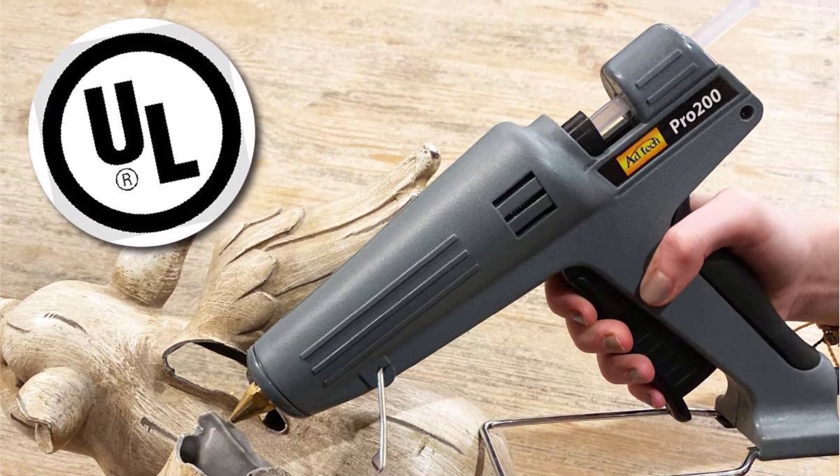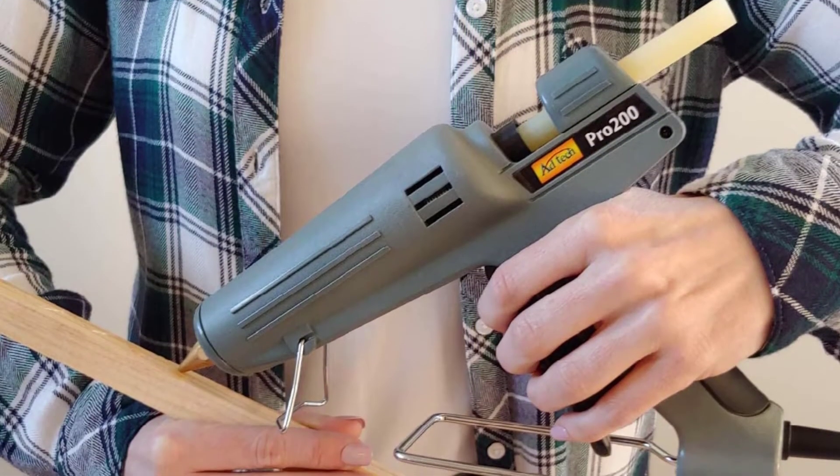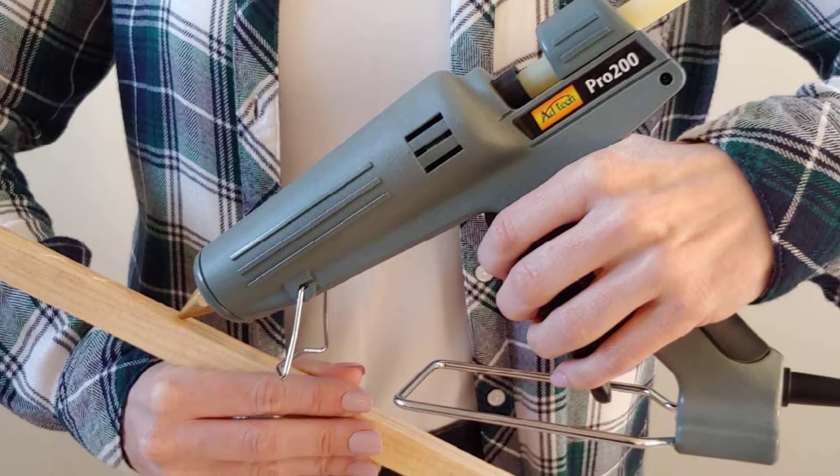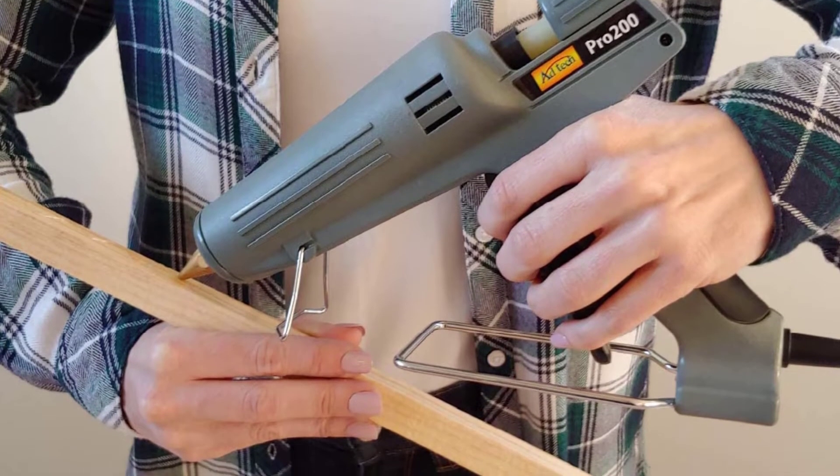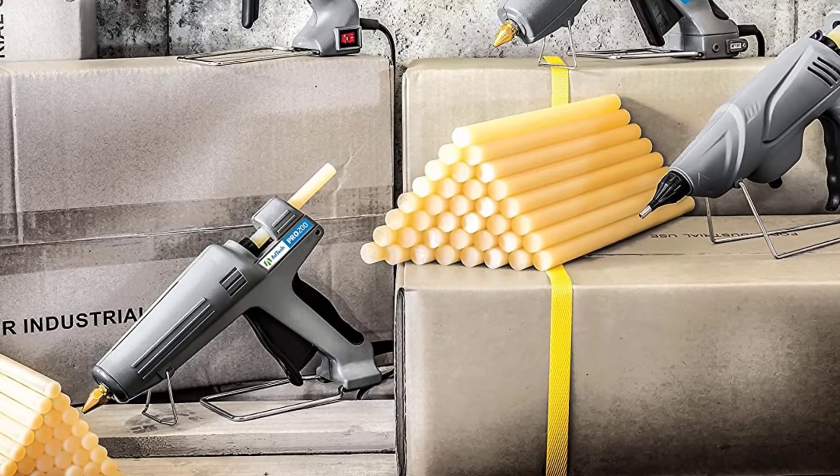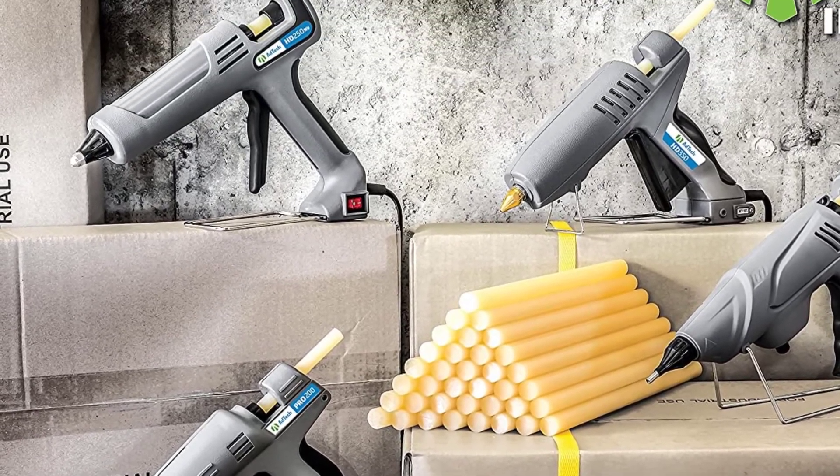The Adtech Pro 200 hot glue gun is the most effective of the options discussed in this piece. This is because in addition to providing a highly powerful heating element of 200 watts, it also uses a larger glue stick size of 1/2 inch.